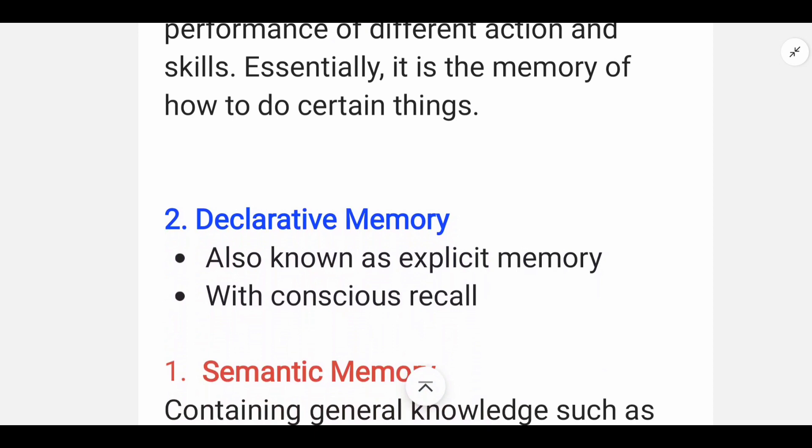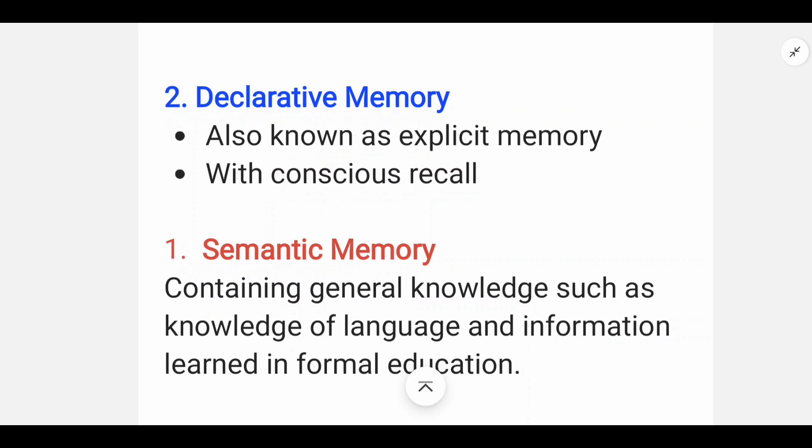Now we have declarative memory. Declarative memory is also known as explicit memory. This is with conscious recall. We want to recall that information, then we recall it. Declarative memory has two types. First is semantic memory. Semantic memory is formal education information.